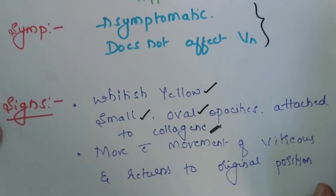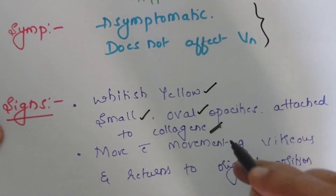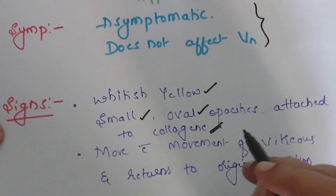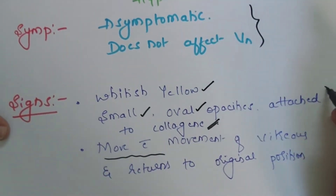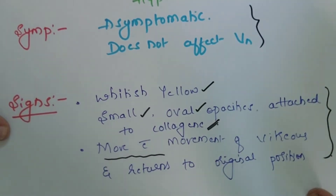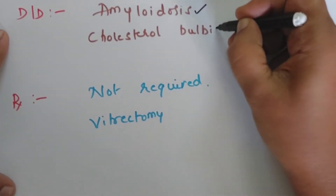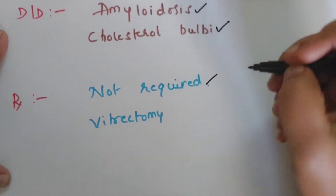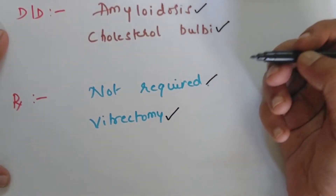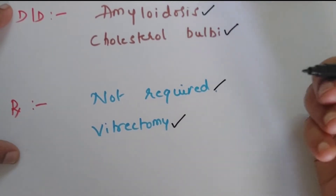There is no vitreous liquefaction in Asteroid Hyalosis — the collagen fibrils are intact and the opacities are attached to them. Hence they move with the movement of the eyeball and return to their original position. The close differentials are amyloidosis and cholesterolosis bulbi, also called Synchisis Scintillans. There is no need for treatment; vitrectomy is needed only if visualization of the retina is hampered and the retinal disease needs treatment.